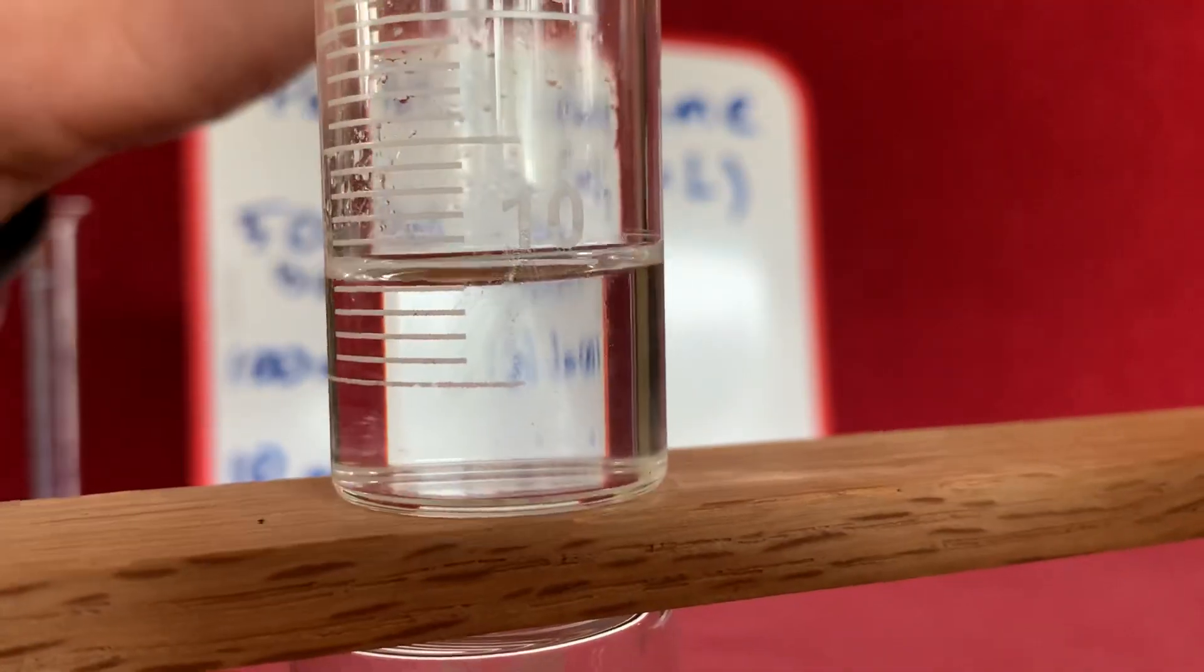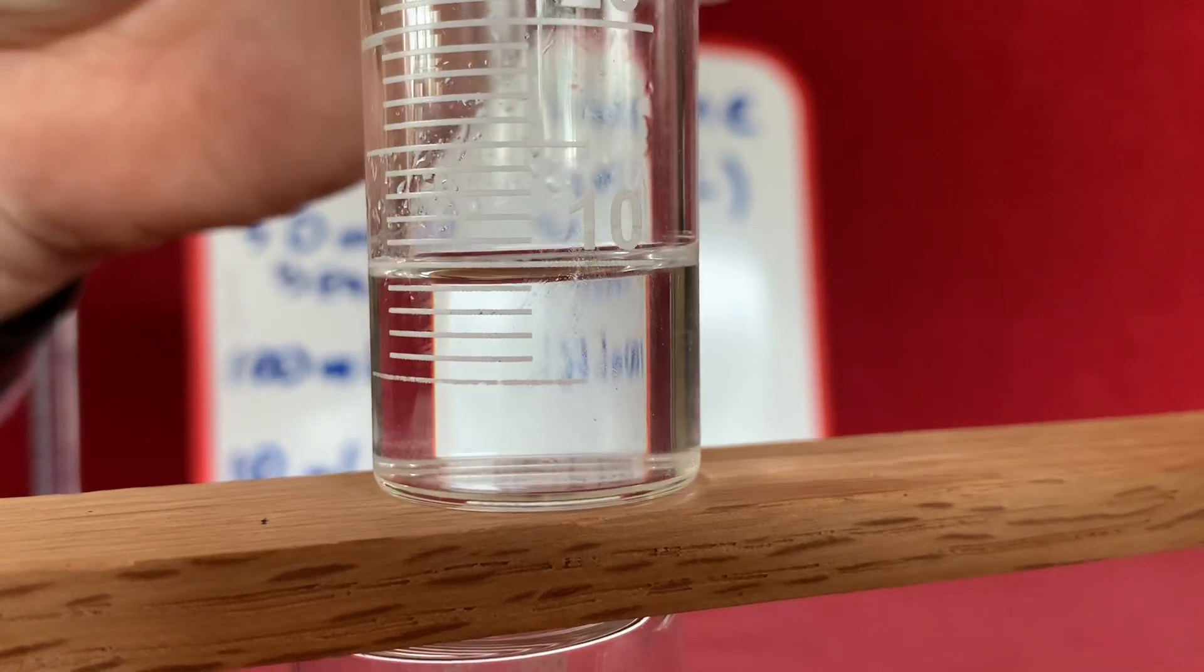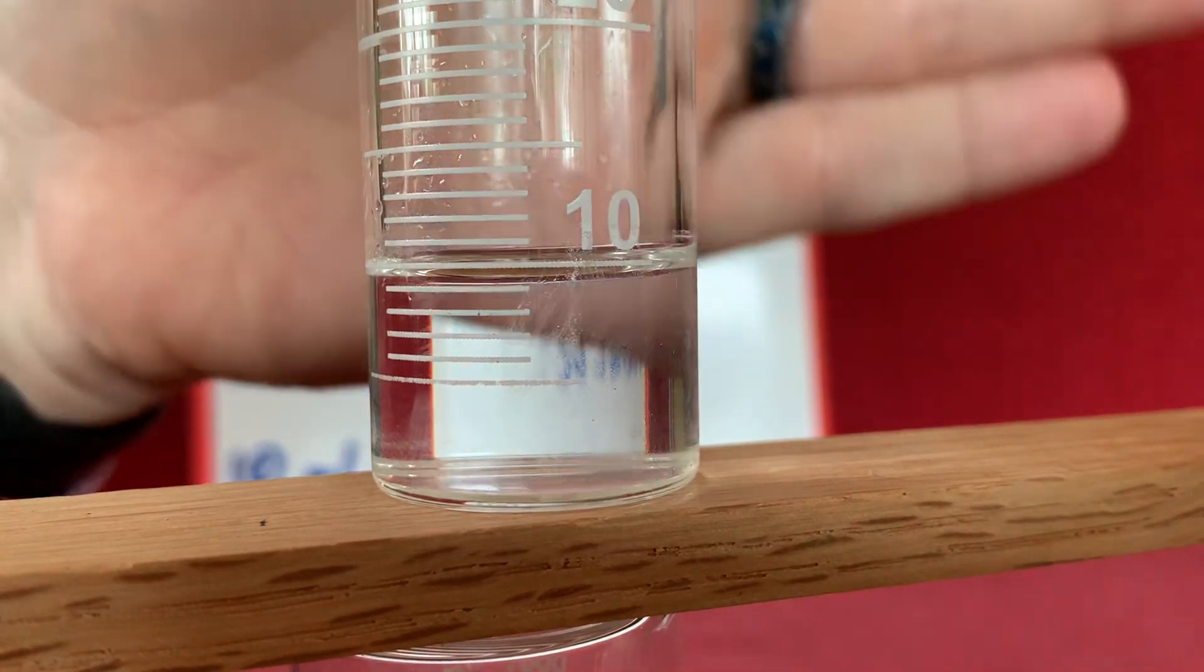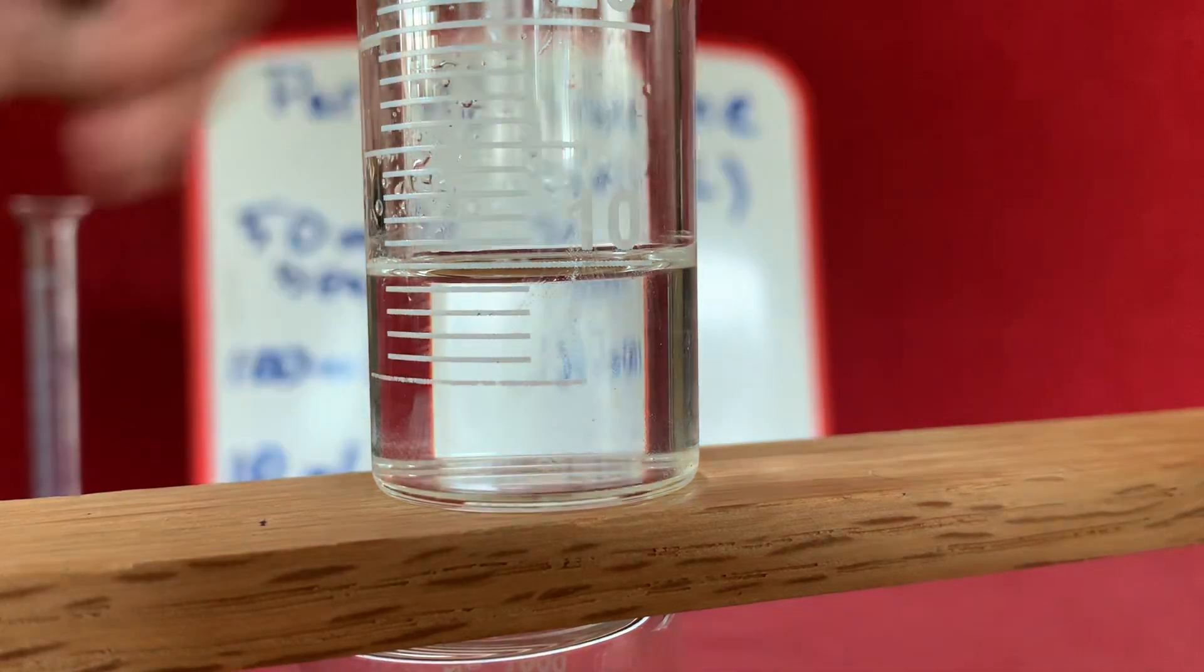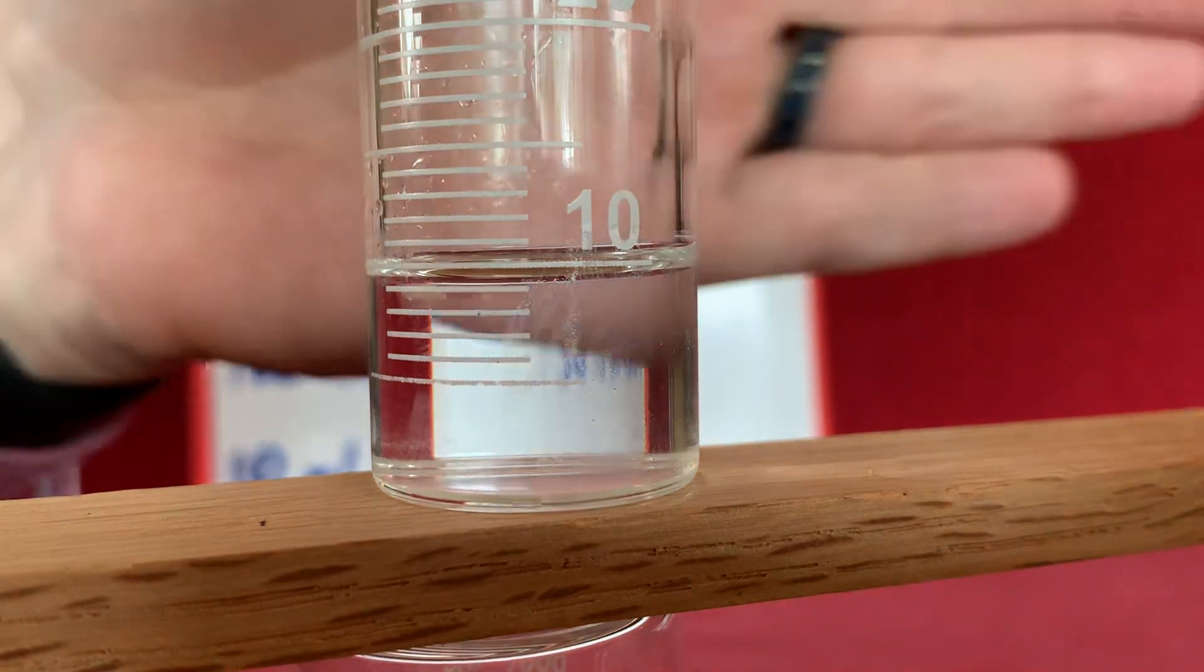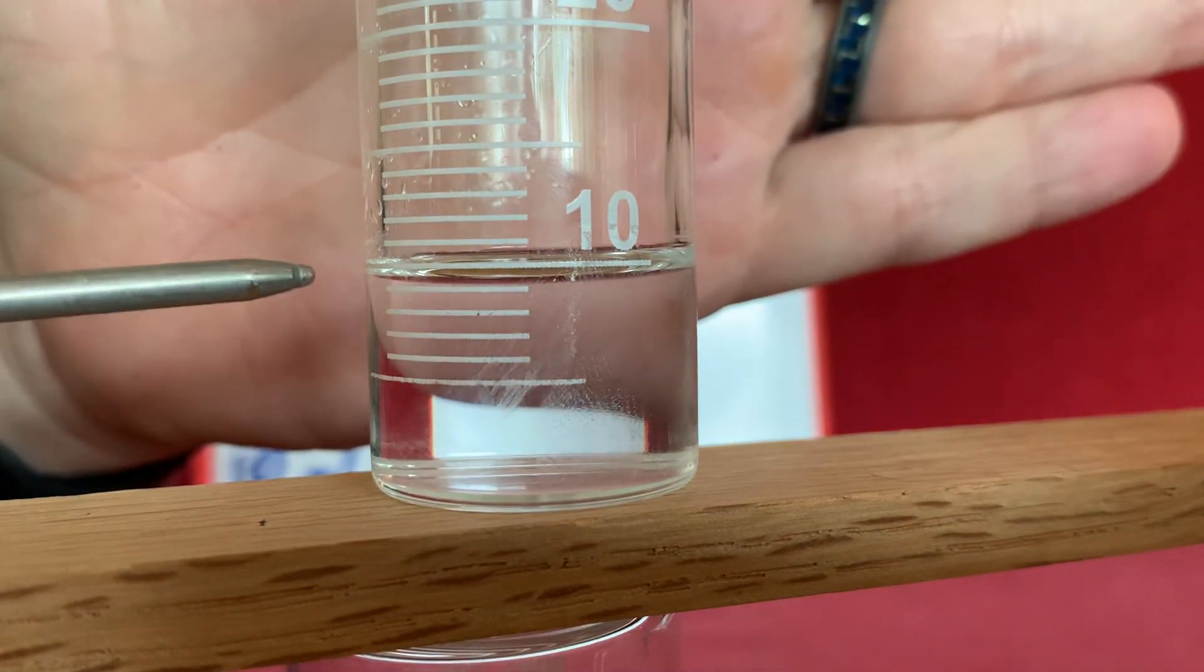So I'm going to put a little spacer here beneath our graduated cylinder so that the camera is more level with the space that we're trying to read. Now I'll put my hand behind here and we see that the meniscus falls right here.